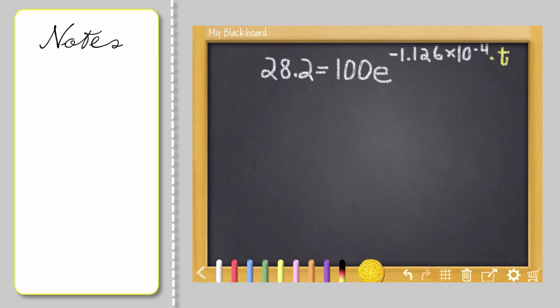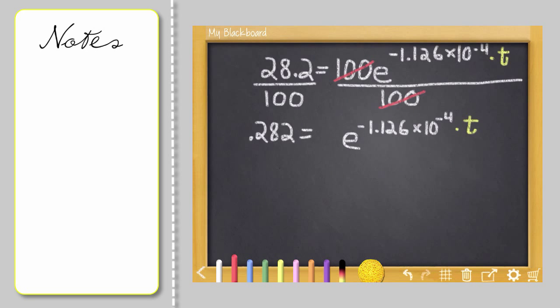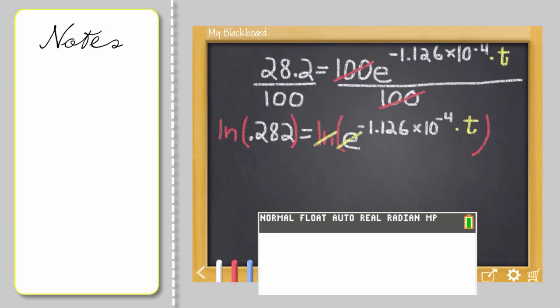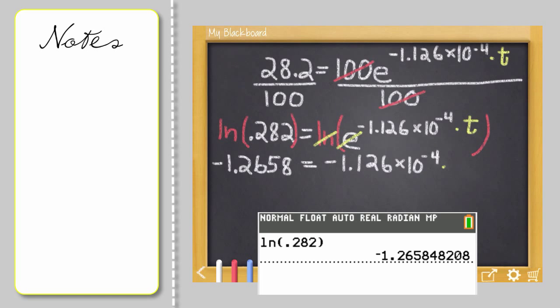28.2, we can leave the percentage. Over here is 100%, the original amount. Divide both sides by 100. Use the natural log on both sides to cancel out that E. We'll need the calculator again to calculate the natural log of .282. Remember, that's actually 28.2% of the sample remaining. And there we go.